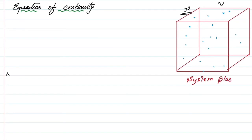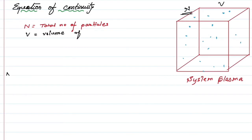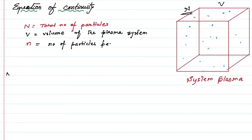It contains a total N number of particles. Suppose N is the total number of particles and V is the volume of the system. Let n be the number density of plasma — or simply plasma density — that is the number of particles per unit volume.